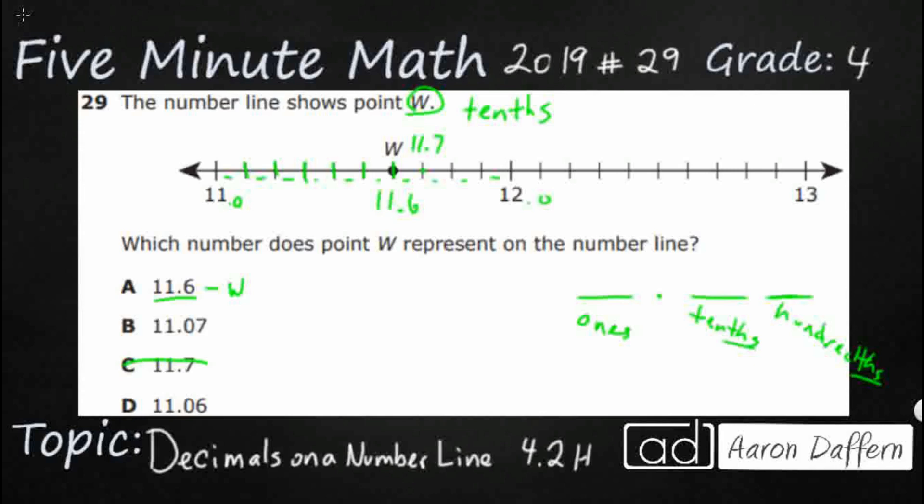Now, we've already decided that this number line is representing tenths. So what's going on with these two? Because we've actually got hundredths over here. So where does this sit? Well, eleven point zero seven and eleven point zero six. Let me show you where that sits right here.